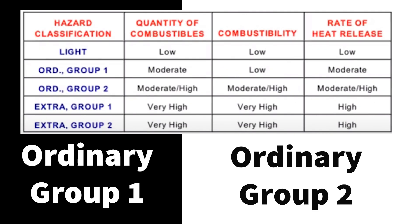Ordinary hazard occupancy breaks into two groups: Group 1 and Group 2. As you can see on our hazard classification chart, ordinary hazard Group 1 is moderate on quantity of combustibles, low on combustibility, and moderate on rate of heat release. When we go to ordinary Group 2, everything across the board goes to moderate-high.